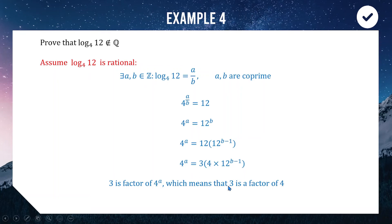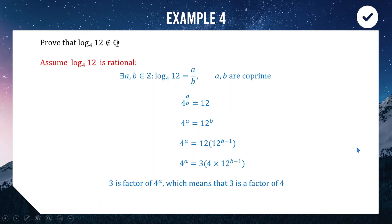Logically, this would mean 3 is a factor of 4 — which is not true. Since 3 is not a factor of 4, it cannot be a factor of 4^a, so we have a contradiction. Our original assumption must be incorrect; therefore log₄(12) is not rational — it is irrational. Sometimes you have to go to extra steps to find a coherent reason why the assumption doesn't make sense.